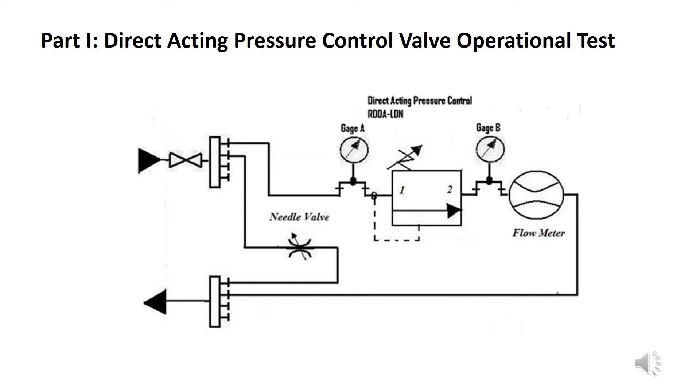But then it won't open any further. At that point, if we begin to increase the pressure on the relief valve, which is the same as saying increase it on gauge A, we'll notice that the difference in pressure between A and B will continue to increase.